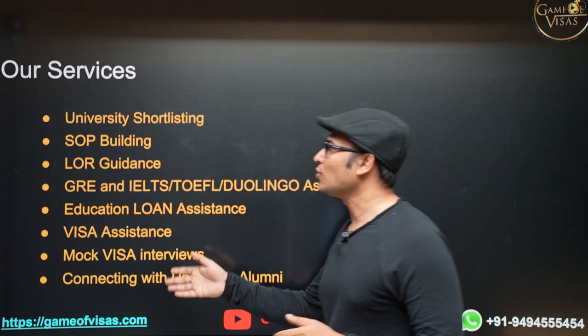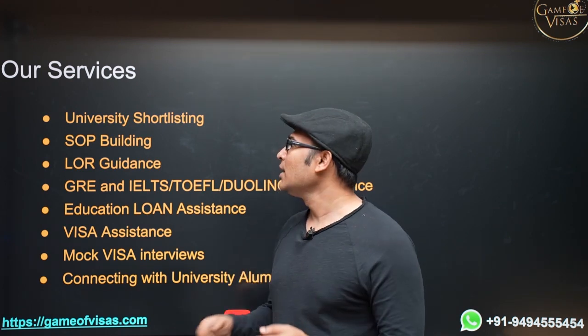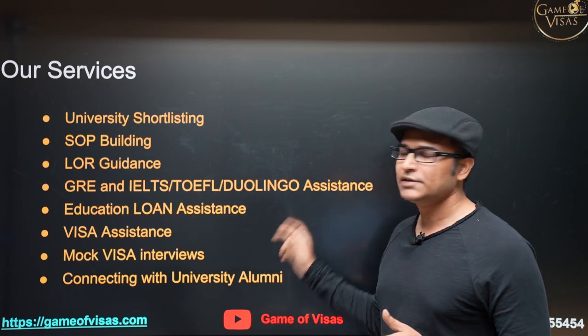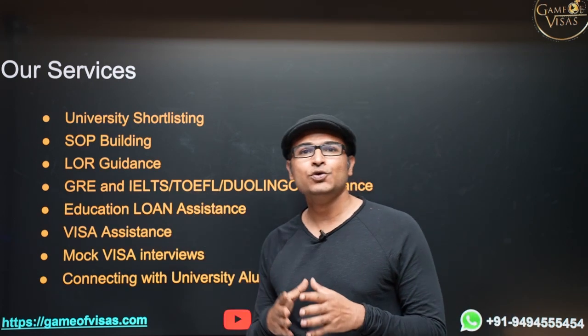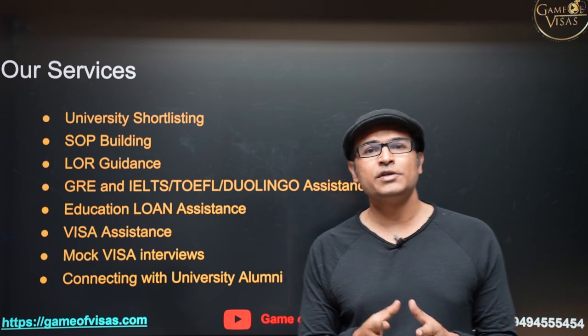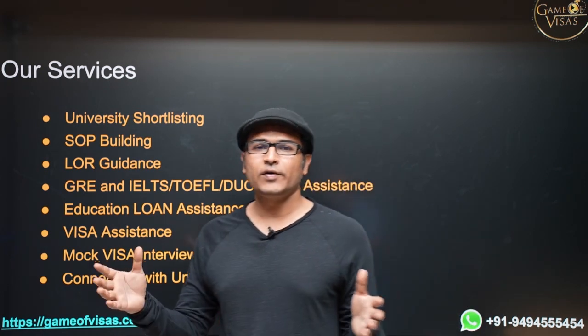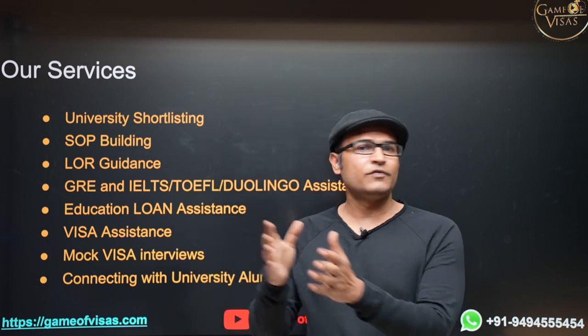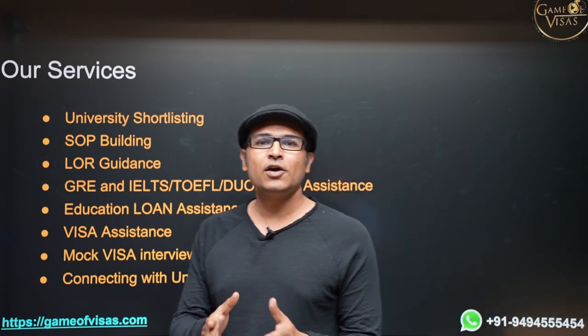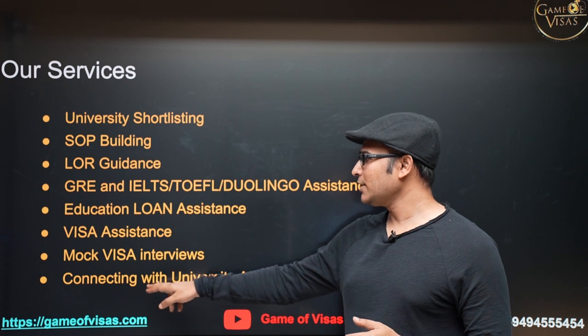And these are all the services that we provide: university shortlisting, so depending on your profile we will shortlist what are the universities that you have to apply; statement of purpose building; and then LOR guidance; and GRE and English test assistance; and education loan assistance. So you don't have to have any collateral, which means without any security now you can get education loan. Getting education loan is very simple these days. And whatever the amount of fee that you have, you have a range of universities - you can apply for 10 lakh universities, 20 lakh universities, or 50 lakh universities. But whatever it is, you are going to get complete education loan, and you can pay off your education loan in one year after you get a job.